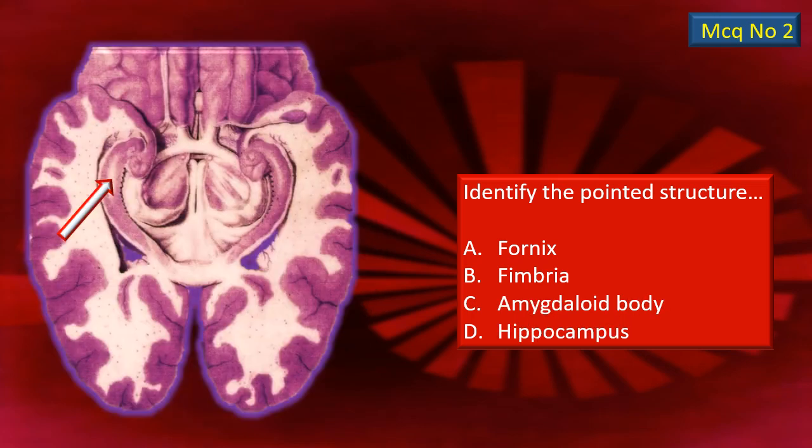MCQ number 2 is a semi-diagrammatic representation showing the details of the floor of the inferior horn of the lateral ventricle. Again there is an arrow mark pointing to a particular structure. There are four choices. Look carefully and identify the correct answer.